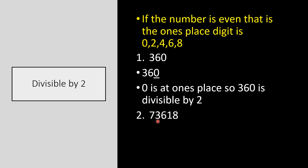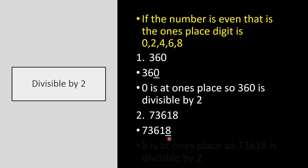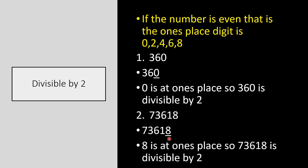Let us take another example: 73,618. Just check what is at the ones place — it is 8. Since 8 is at the ones place, 73,618 is divisible by 2.